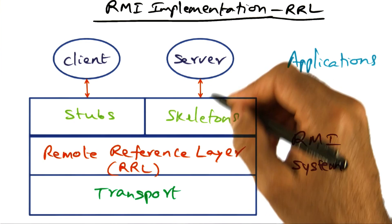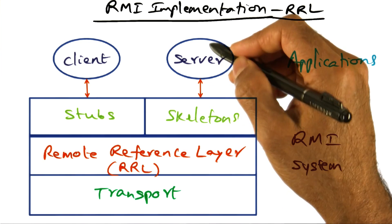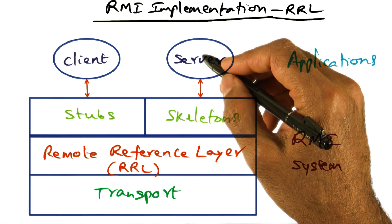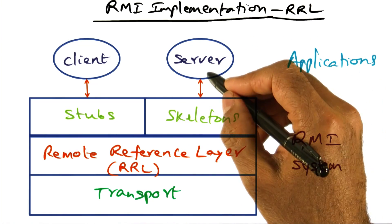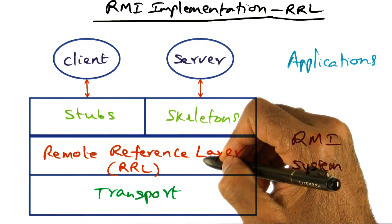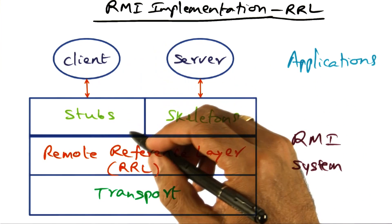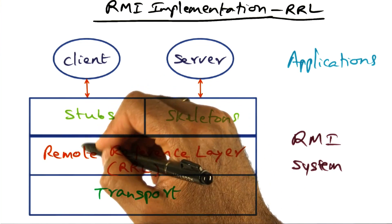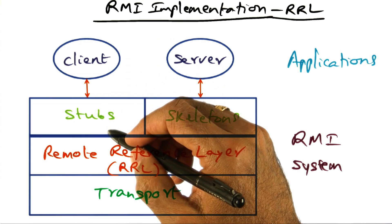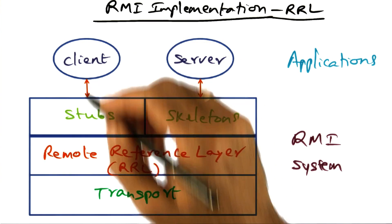The skeleton then makes the call up to the server that is implementing the remote object. Once the server is done with the service, the skeleton marshals the result and once again goes through the remote reference layer to send it over to the client. When it comes back, the remote reference layer and the stub work together to deliver the results in a digestible format to the client.